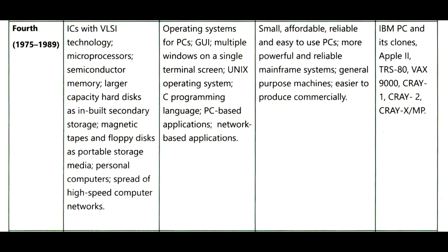The time period of fourth generation computers is 1975 to 1989. Components include ICs with VLSI technology, microprocessor, semiconductor memory, large capacity hard disk, magnetic tapes, and floppy disk as portable storage media. Software used include operating systems for PC, GUI (graphic user interface), multiple windows on a single terminal screen, Unix operating system, C and C++ programming, and many more. They are smaller, affordable, reliable, and easy to use. Personal computers belong to this generation. Examples are IBM PC and its clones, Apple 2, TRS 80, VAX 9000, Cray 1, Cray 2, and Cray X.